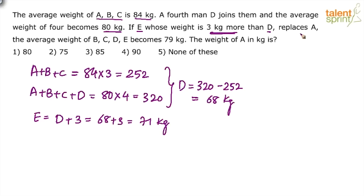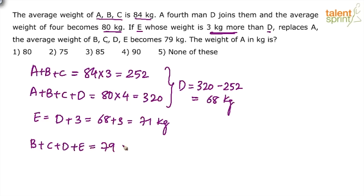E replaces A, and the average weight of B, C, D, E becomes 79 kg. The sum of B plus C plus D plus E will be 79 times 4. 79 times 4 is 316.